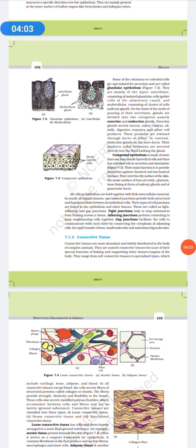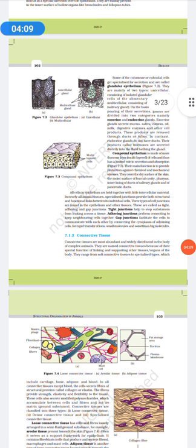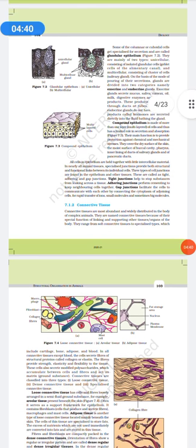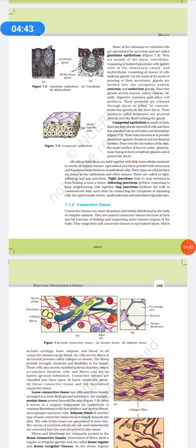Then we have compound epithelium, which is made of more than one layer of cells and thus have limited role in secretion and absorption. Their main function is to provide protection against chemicals and mechanical stresses. They cover the dry surface of the skin, the moist surface of the buccal cavity, pharynx. All cells in the epithelium, they are held together with intercellular material. So here there are three types of cell junctions which can be found. These cell junctions that is there in the epithelium or other tissues, they are called tight, adhering and gap junctions. Tight junctions help to stop substances from leaking across the tissue. Adhering junctions perform cementing to keep the neighboring cells together. And gap junctions facilitate the cells to communicate with each other by connecting the cytoplasm of adjoining cells for rapid transfer of ions.